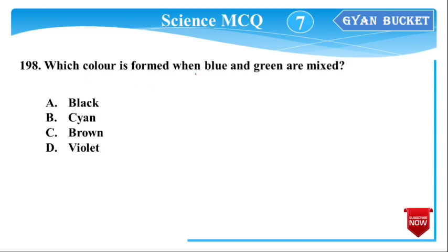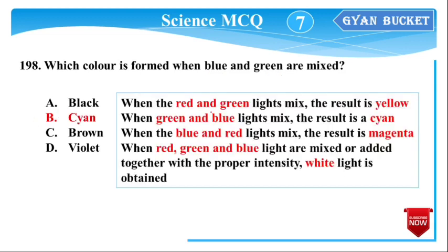Next question: Which color is formed when blue and green are mixed? The answer is cyan color — option number B. In RGB color mixing: red + green = yellow, green + blue = cyan, blue + red = magenta, and red + green + blue = white.